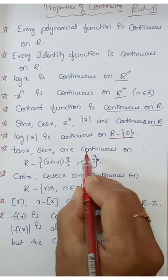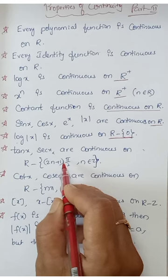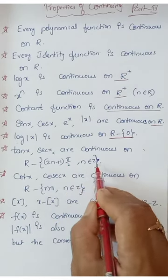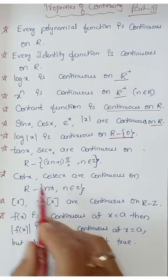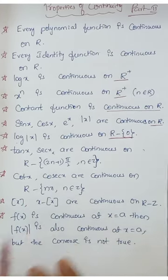tan x, sec x are continuous on R minus (2n+1)π/2 where n belongs to integers. cot x, cosec x are continuous on R minus nπ where n belongs to integers.